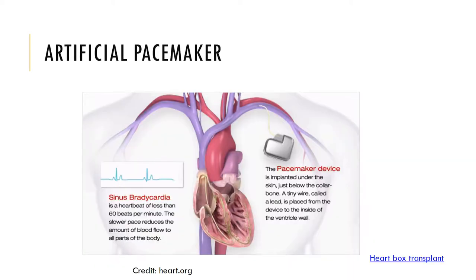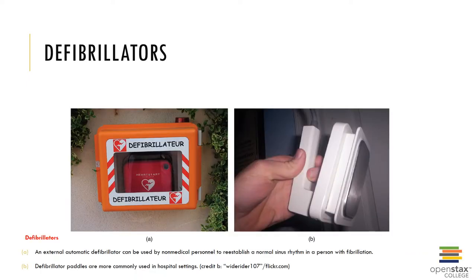Artificial pacemakers can be implanted to assist with problems with heart rate or the heart starting on its own. This device can be implanted just below the skin inside the ventricle wall. If the heart rate is too low — bradycardia, a condition where the heart rate is slower than normal at less than 60 beats per minute — someone might be eligible for a pacemaker. Defibrillators can also be used to restart the heart and can be found in hospital settings and various public locations such as office buildings.